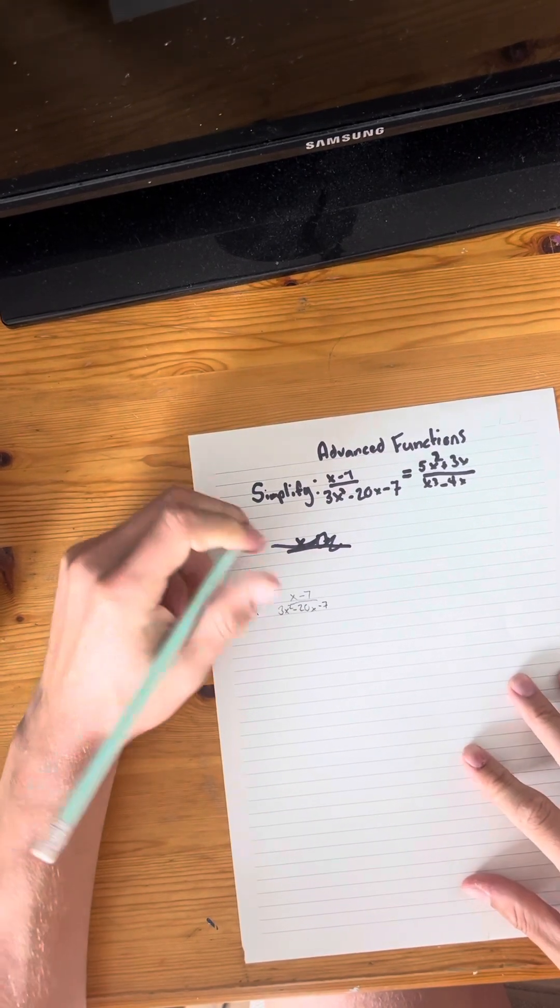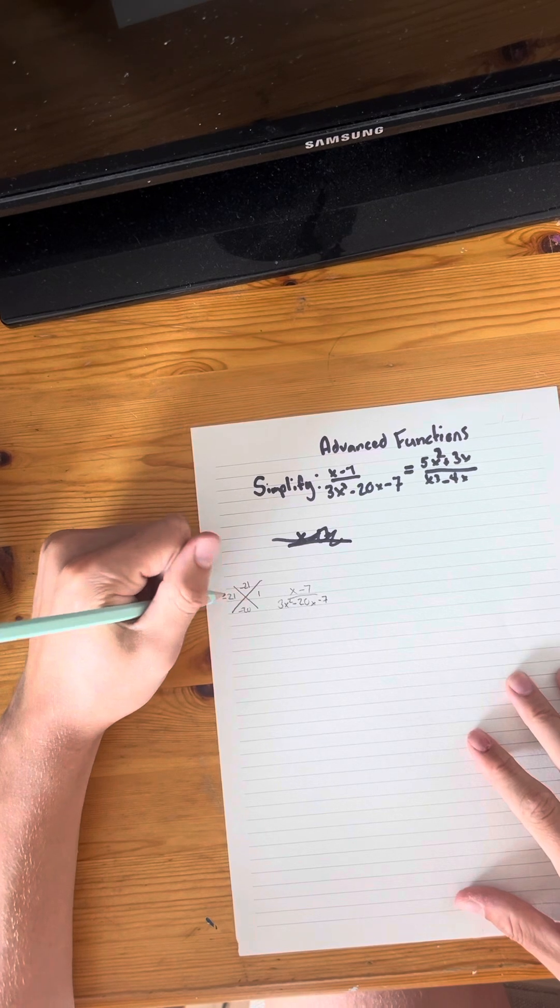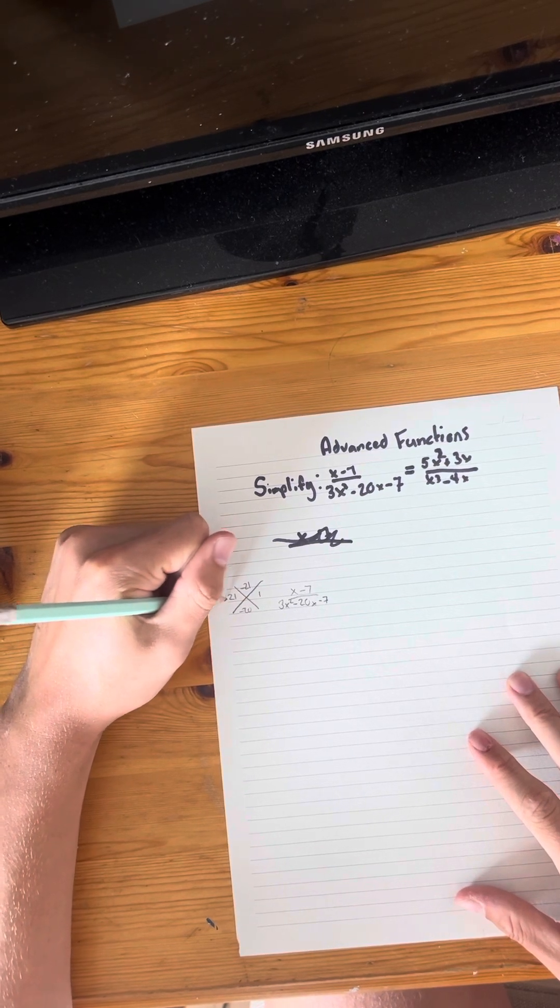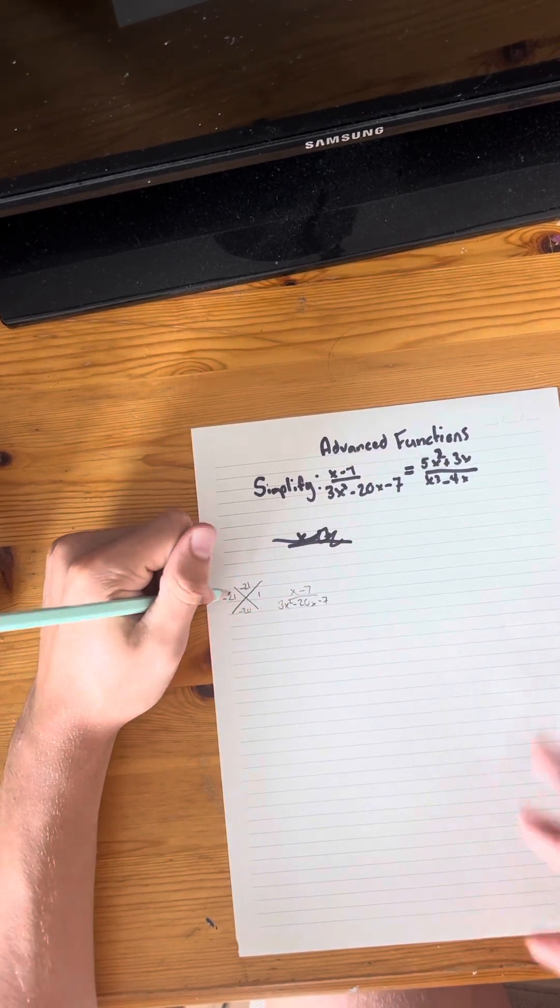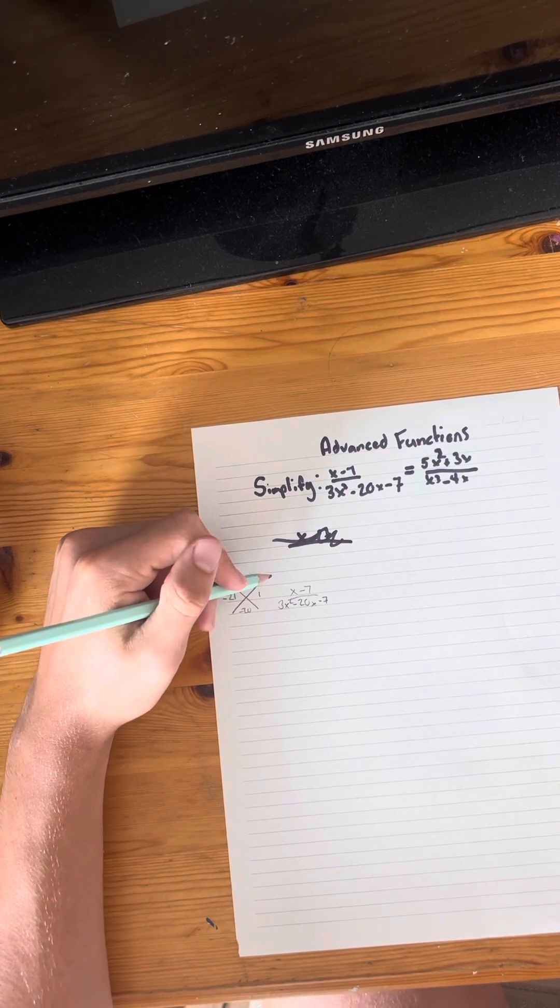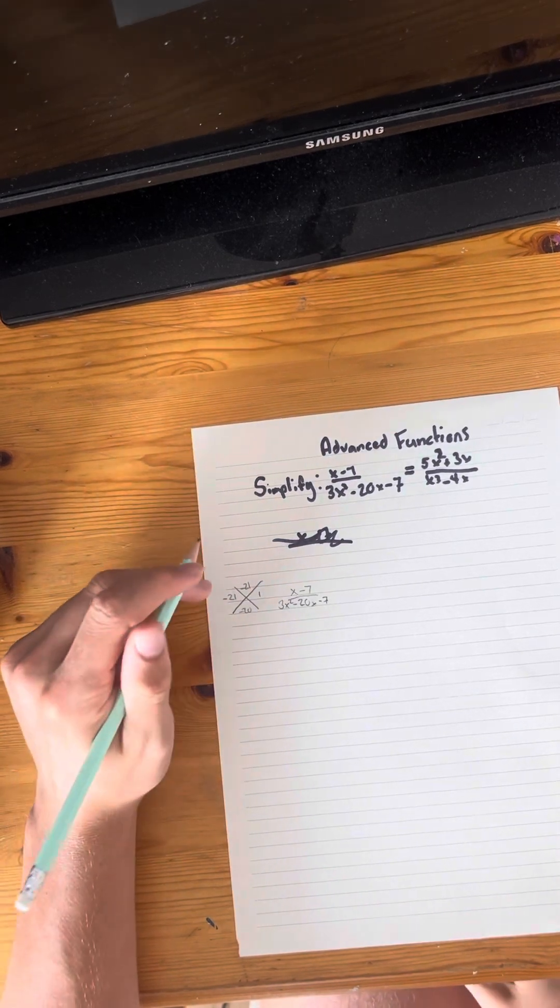Negative 21 and 1. It's simple as that because negative 21 plus 1 equals negative 20, and obviously negative 21 times 1 equals negative 21. Pretty simple stuff so far.